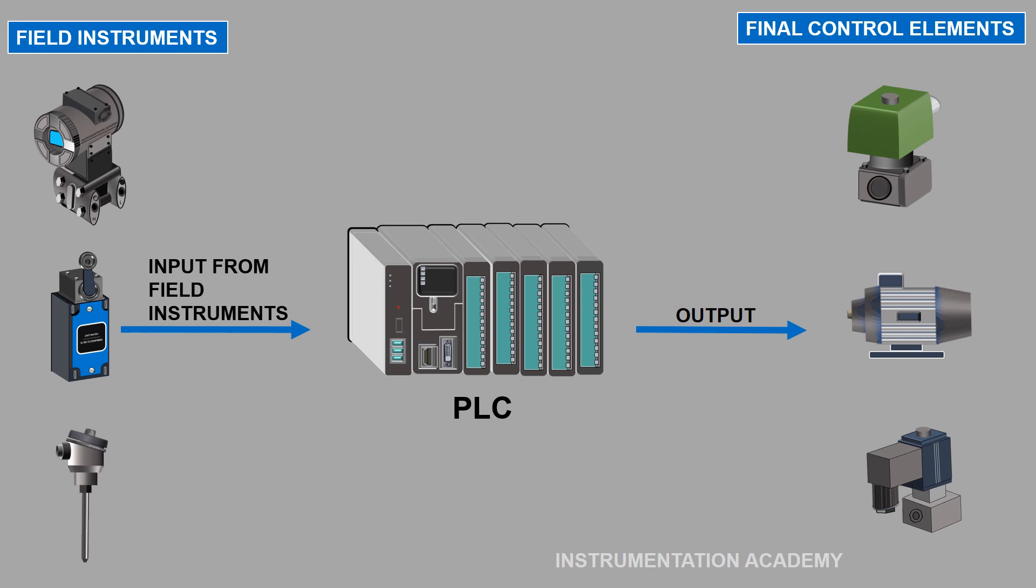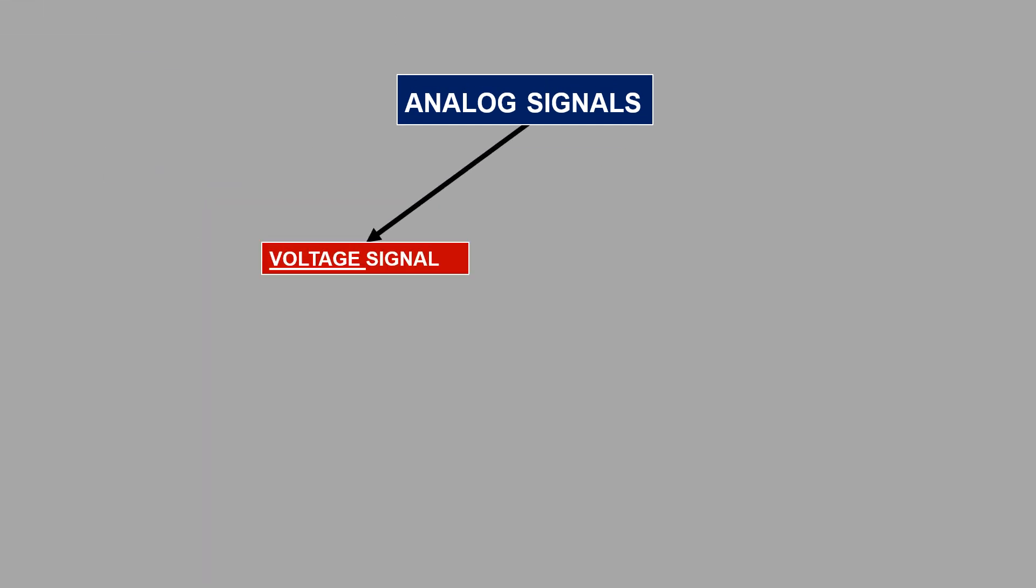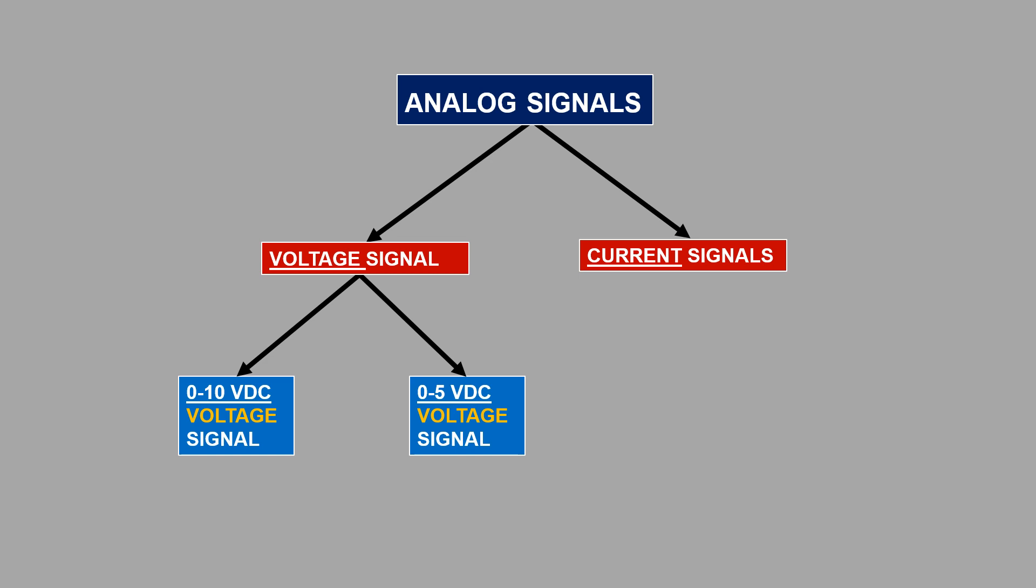The input or output of a controller like PLC can be an analog or a digital signal. The analog signal can be transmitted as either a voltage signal or current signal. Usually, analog voltage signal can be 0 to 10 volt or sometimes 0 to 5 volt, and analog current signal can be typically 4 to 20 mA.